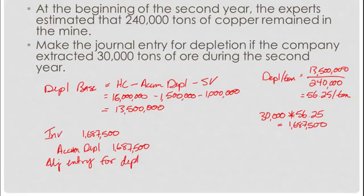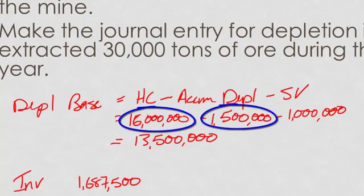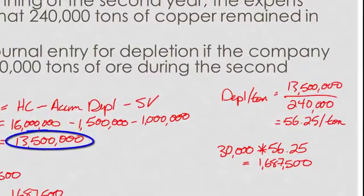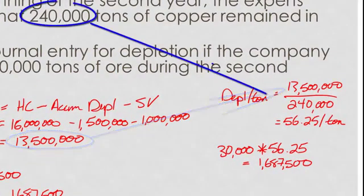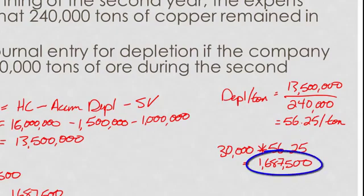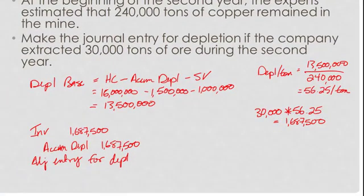Let's walk through this calculation together. First off, we need to figure out our new depletion base, because we've had to start fresh with our depletion method since we have a new estimate. We take our historical cost minus our accumulated depletion — that gives us our carrying value. And then we take out our salvage value. So our new depletion base is $13.5 million. With that depletion base, I can now get a cost per ton: $13.5 million divided by 240,000 gives me $56.25 per ton. I extracted 30,000 tons for a total this year of $1,687,500. And that leads us to our journal entry. Hopefully you feel pretty good both about the method and about the concept.